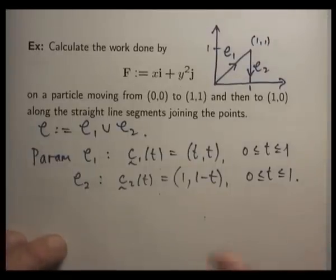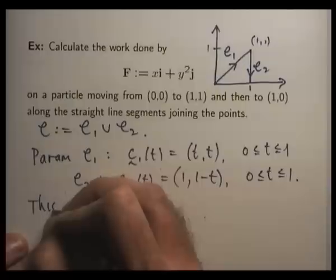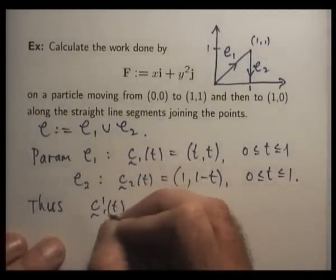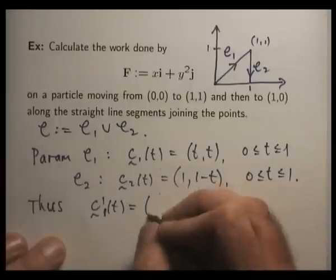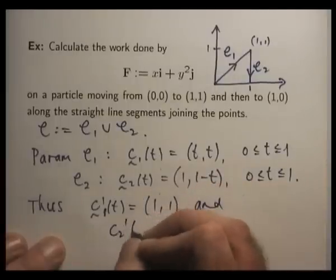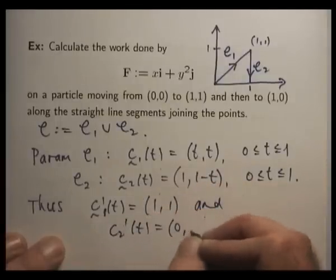So let's calculate the derivatives. C1 dash is going to be (1,1). And C2 dash is going to be (0,-1).